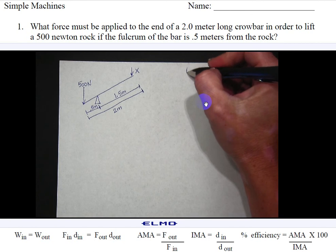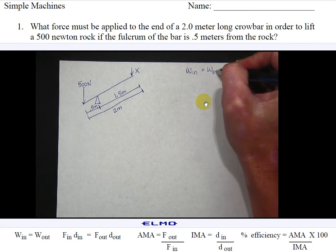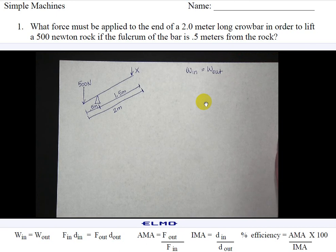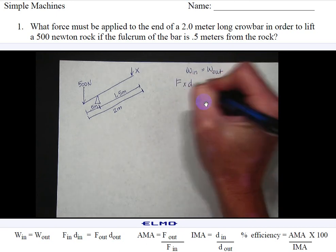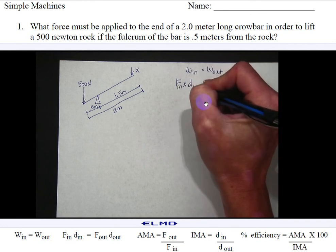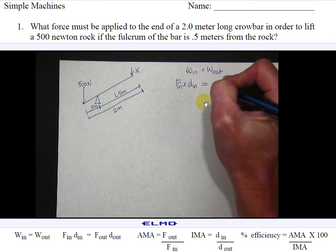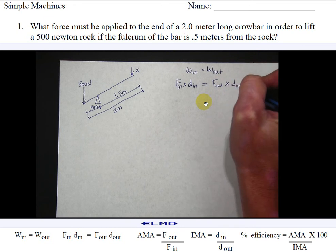We've learned that the work of the input force has to equal the amount of work done in the output force and the formula for work is force times distance. So the force of the input times the distance of the input must equal the force of the output times the distance of the output.